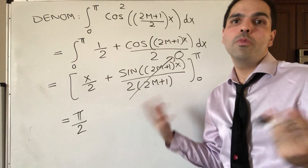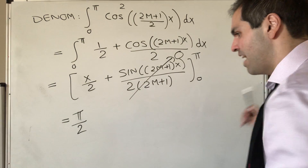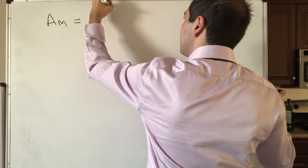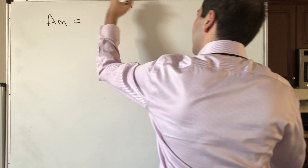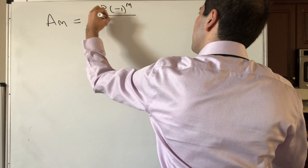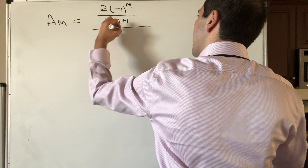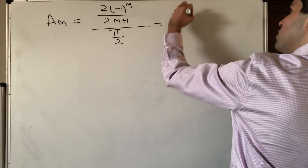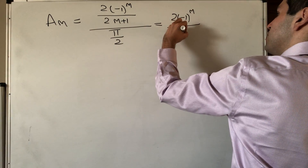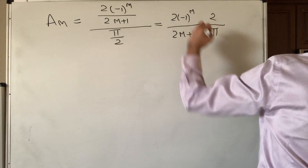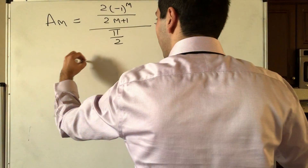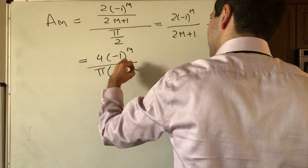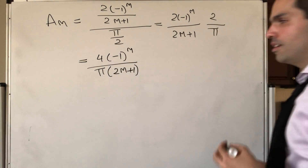Now that we have the numerator and the denominator, we can evaluate a_m. It's just the ratio: numerator was (−1)^m · 2/(2m+1), denominator was π/2. So a_m = (−1)^m · 2/(2m+1) × 2/π, which gives us 4(−1)^m / (π(2m+1)).